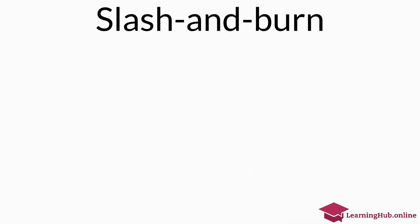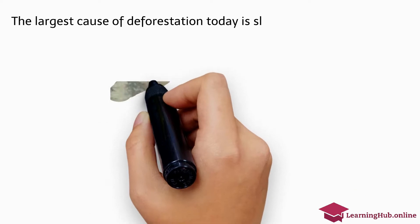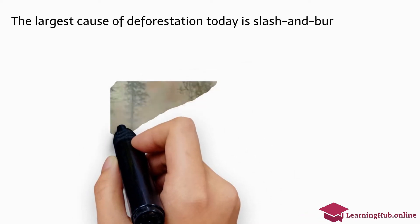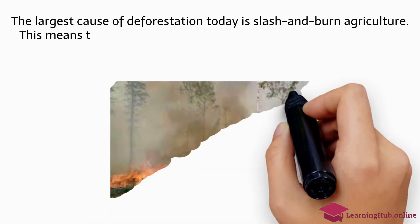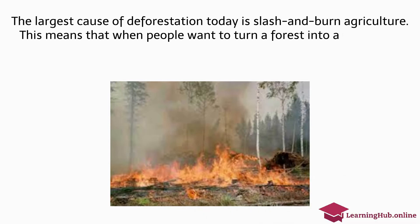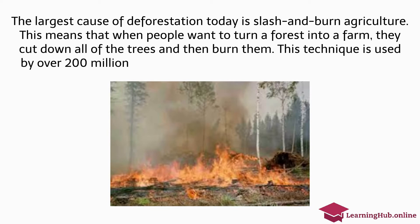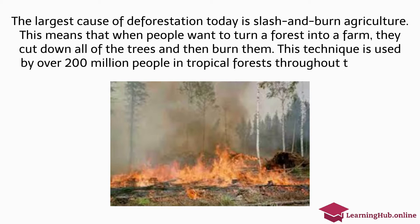Slash and Burn. The largest cause of deforestation today is slash-and-burn agriculture. This means that when people want to turn a forest into a farm, they cut down all of the trees and then burn them. This technique is used by over 200 million people in tropical forests throughout the world.